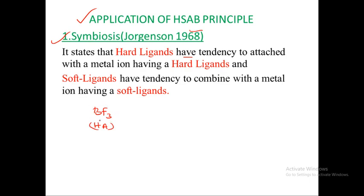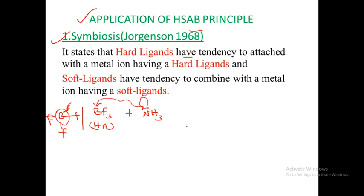Boron trifluoride has a structure where three fluorines are bonded. Since boron has atomic number five, it has three valence electrons, all of which are bonded. It acts as a central metal, so it has a tendency to accept electron pairs — that is, it acts as a Lewis acid. When it reacts with NH3 (ammonia), since nitrogen has atomic number seven and five valence electrons, it has one lone pair which attacks the boron.